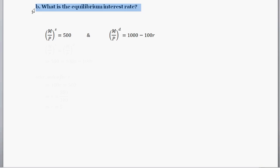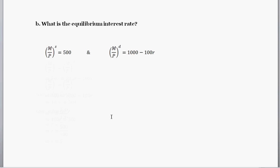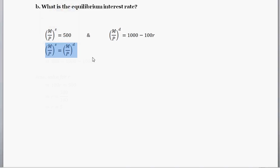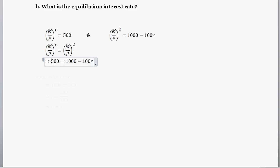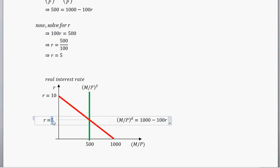Part B asks: what is the equilibrium interest rate? We have a real money supply of 500 and the money demand equation of 1,000 minus 100R. To find the equilibrium, we set money supply equal to money demand: 500 equals 1,000 minus 100R, and solve for R. We find that the equilibrium real interest rate is 5%.